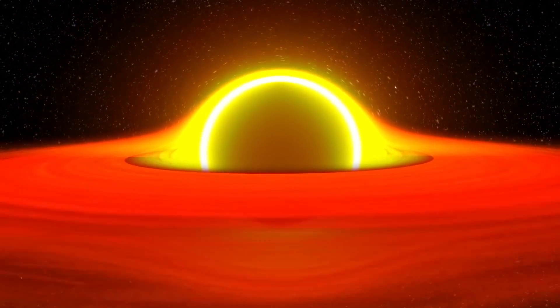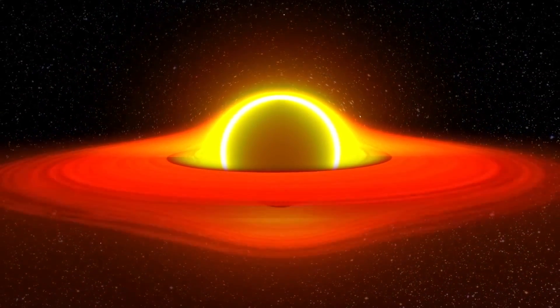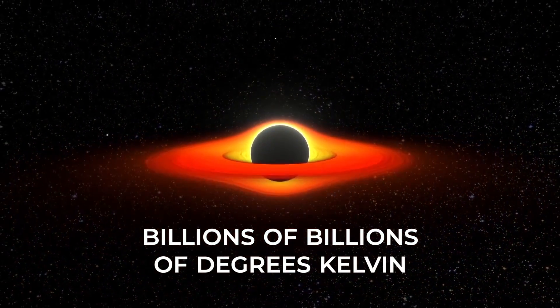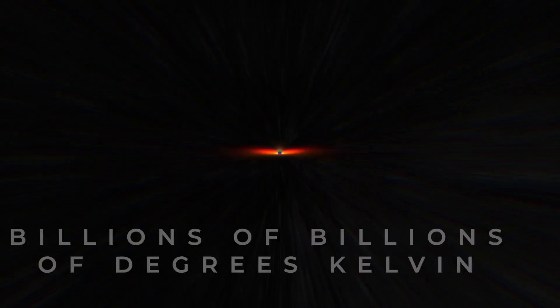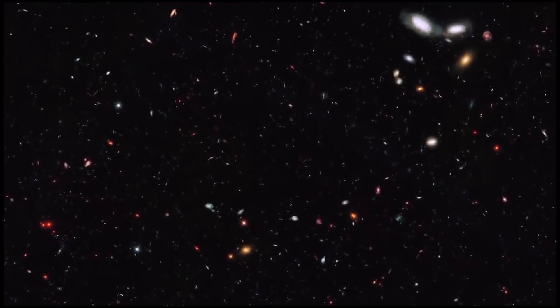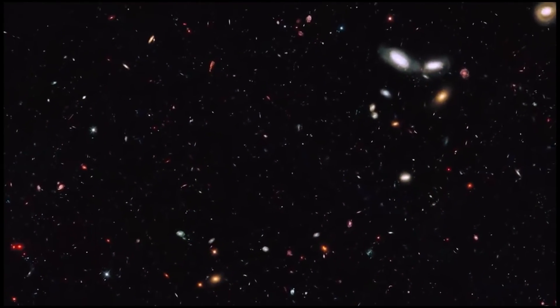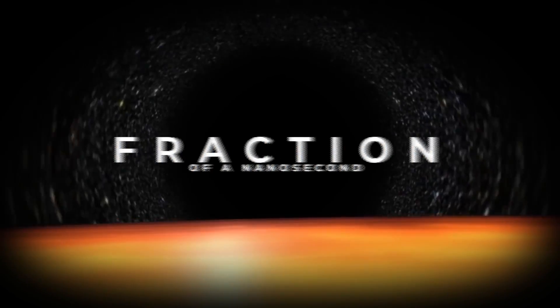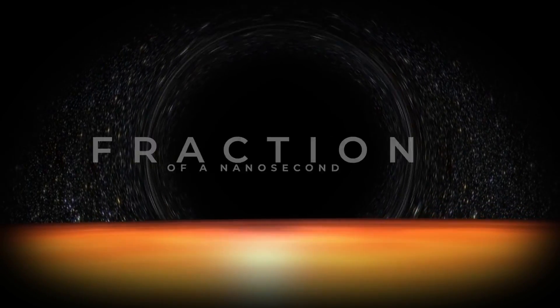These mini black holes are super hot, reaching temperatures well above any temperature that astronomers have ever found, in the order of billions and billions of degrees Kelvin. Because of their intense heat and minuscule size, these mini black holes evaporate extremely quickly, on the order of a tiny fraction of a nanosecond. But how would these black holes be formed?